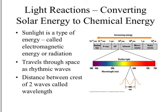The light reactions convert solar energy to chemical energy. To start, what is sunlight? It's electromagnetic energy or radiation that travels through space as waves. The distance between two crests — the tops of the waves — is what we call a wavelength. There are different wavelengths of energy that can move through space.